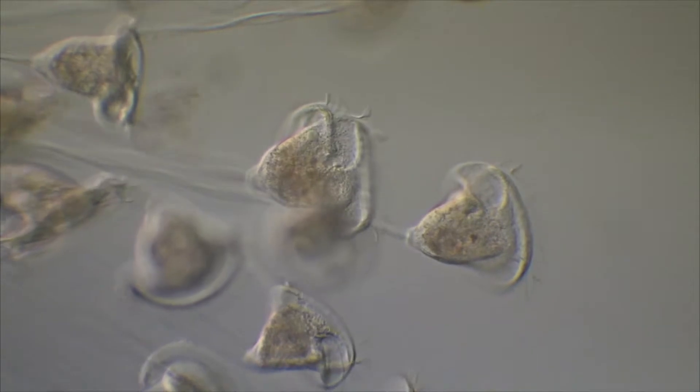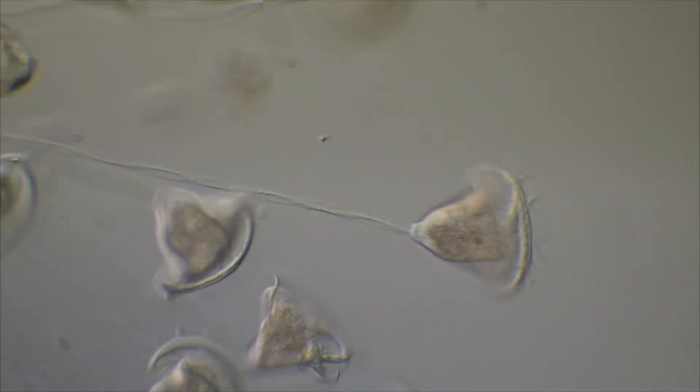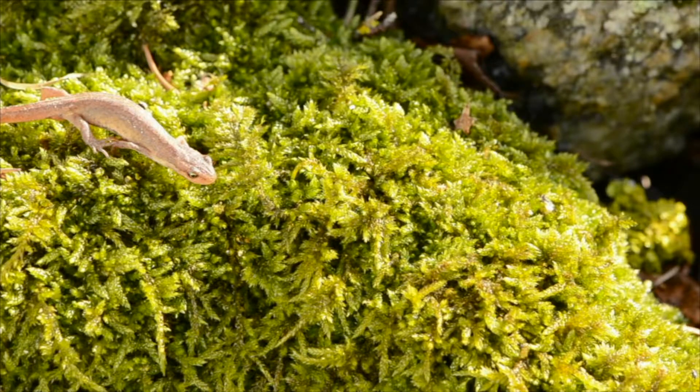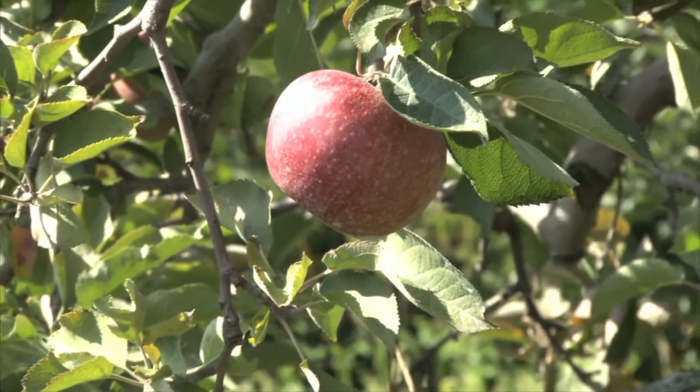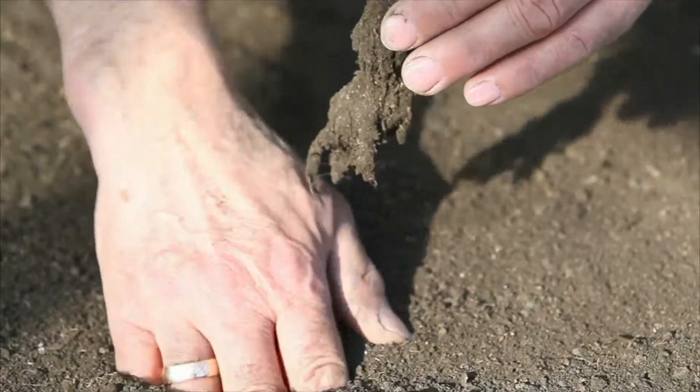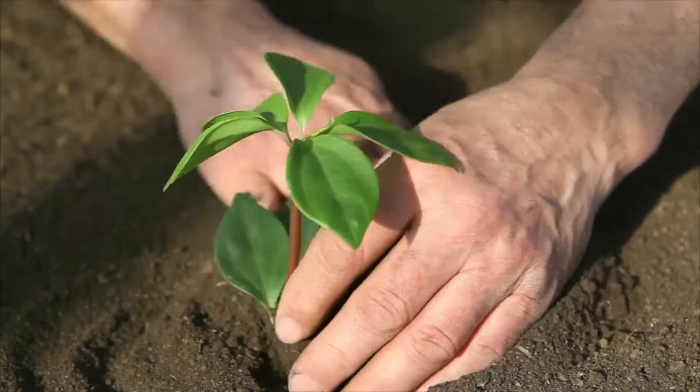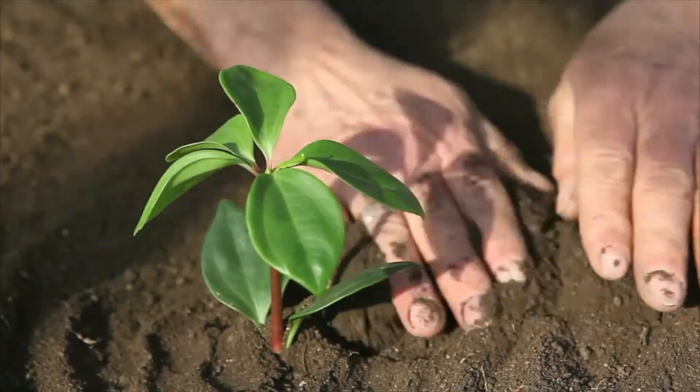All prokaryotes and most protozoans, such as this vorticella, reproduce asexually, as do simple plants such as mosses. Many higher plants can reproduce asexually. This property is put to use by farmers and horticulturists who use cuttings and root division to create identical plants with desirable traits.